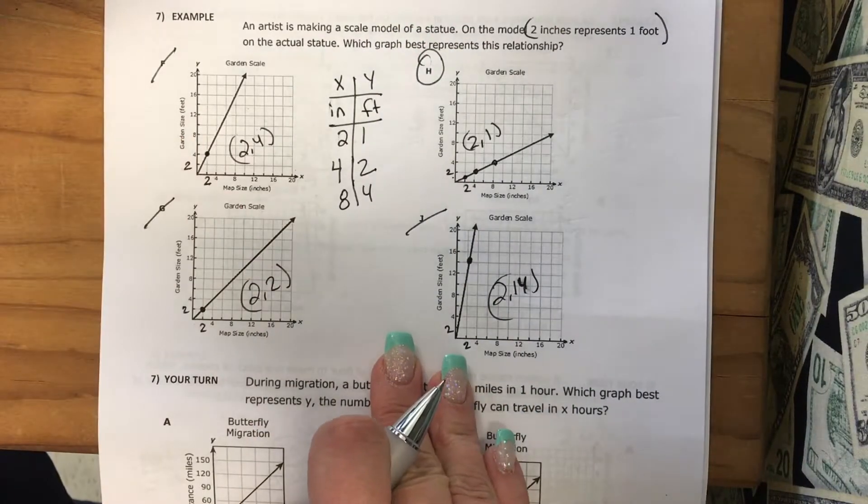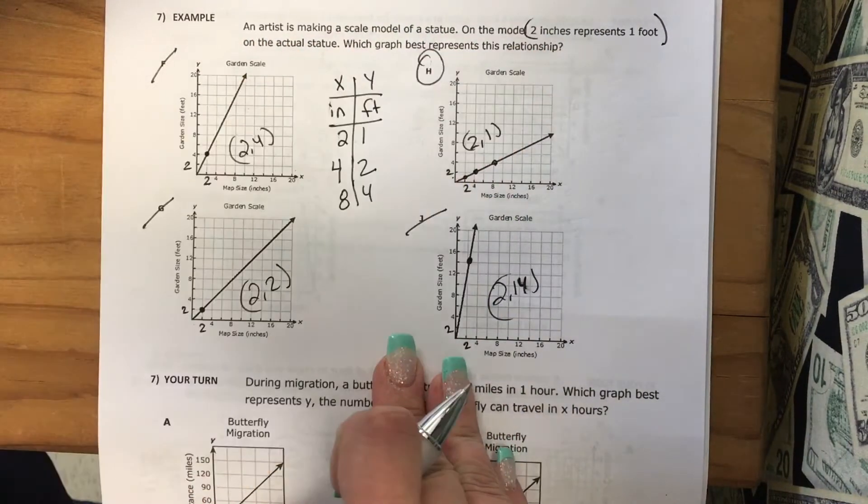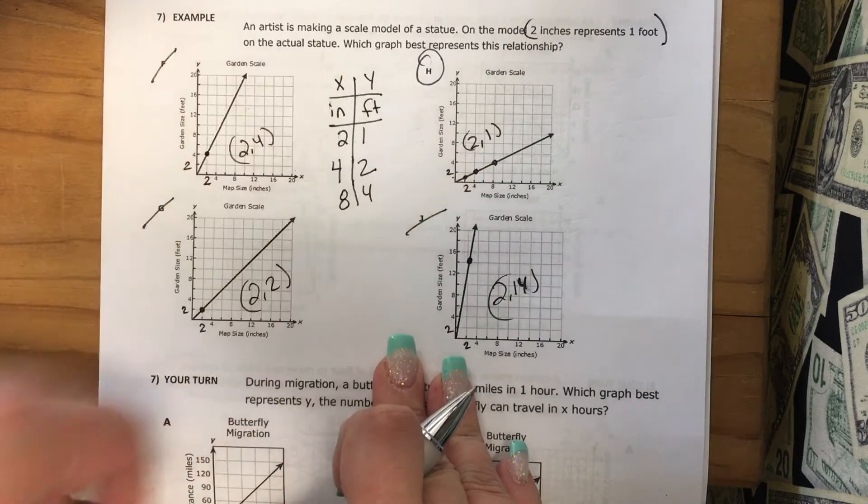So really it's as easy as finding that one point. Find the one point they're asking you to look for and make sure it's on your graph.